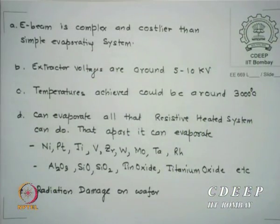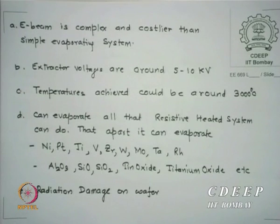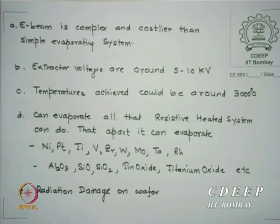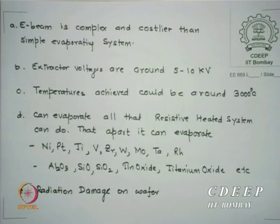The advantage and disadvantage of this system: e-beam is complex and costlier than simple evaporation. A simple evaporation system from an Indian company can be as low as 3.5 lakhs, whereas buying from abroad — Edwards, Varian, or others — may cost 12 to 15 lakhs, and e-beam is even costlier.